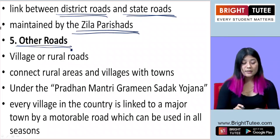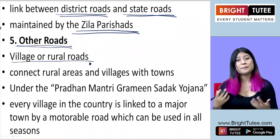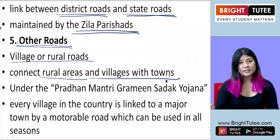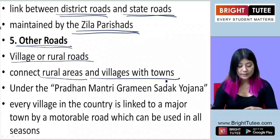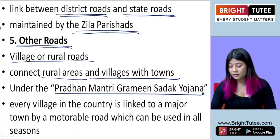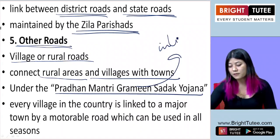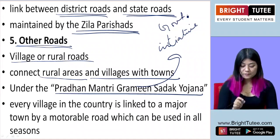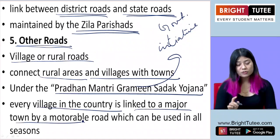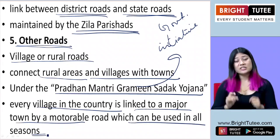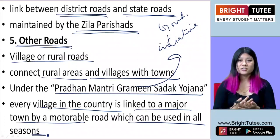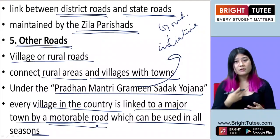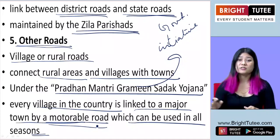Other roads are basically village or rural roads found in the countryside. Their main role is to connect villages with towns and cities. Under the Pradhan Mantri Grameen Sadak Yojana — a government initiative — every village in the country should be linked to a major town by a motorable road usable in all seasons. This scheme ensures that the roads are suitable for vehicles and not just usable in particular seasons, but throughout the year.